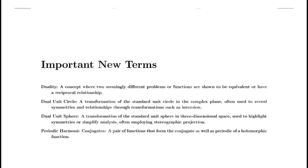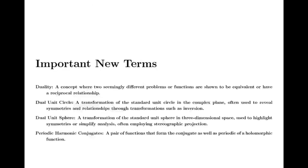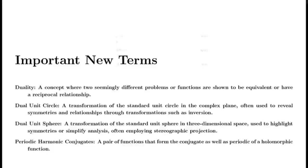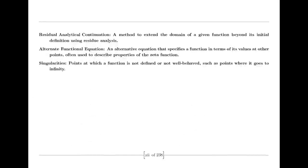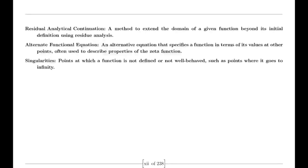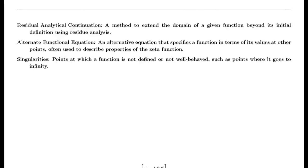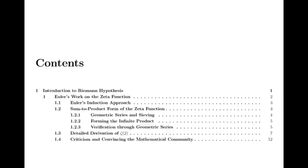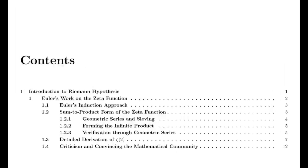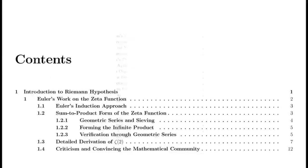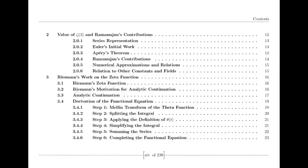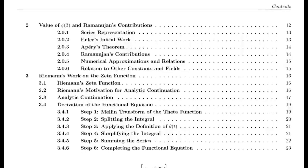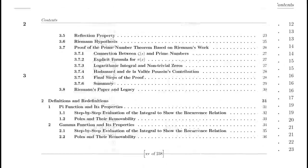Moving to the 19th century, we encounter Bernhard Riemann, who expanded our understanding of complex functions. Riemann introduced the concept of analytic continuation, which allowed extension of functions beyond their initial domains. He extended the Riemann zeta function — initially defined only for complex numbers with real parts greater than 1 — to the entire complex plane except s = 1, where it has a simple pole. This was a crucial advancement in complex analysis.